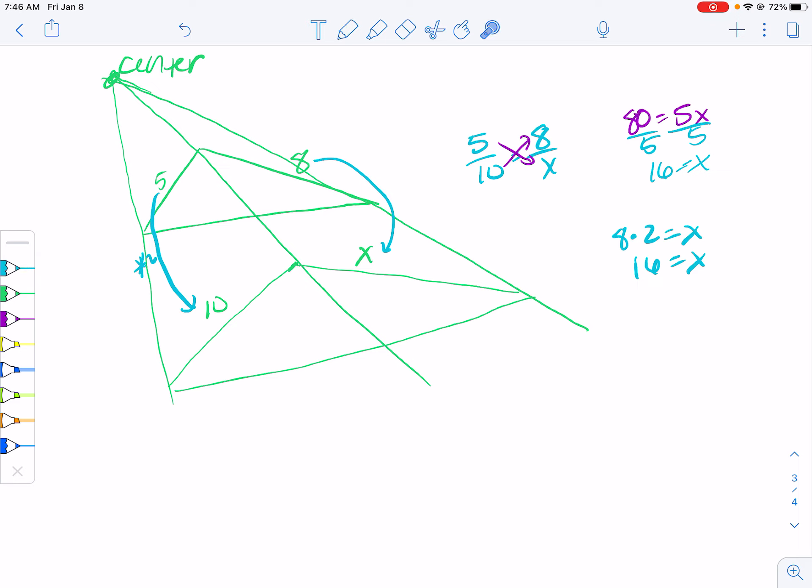So you can set it up so you find the scale factor and then multiply by the scale factor to get to the missing side. Or you can do it so that you set up a proportion and use the proportion to help you solve for it. And the proportion will have this scale factor in it.